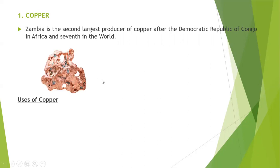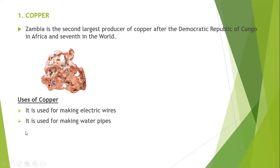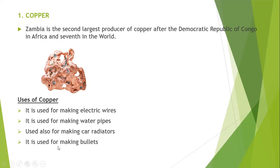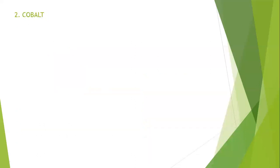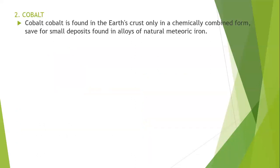The uses of copper include making electric wires, making water pipes, making car radiators, and making bullets. Here you can see copper wires which have been made from copper.